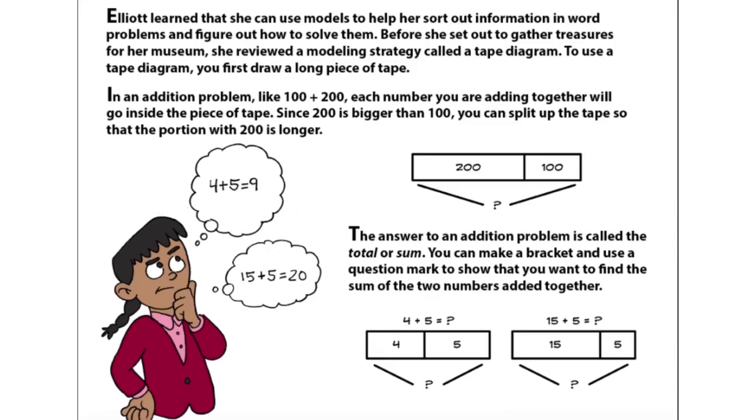Elliott learned that she can use models to help her sort out information in word problems and figure out how to solve them. Before she set out to gather treasures for her museum, she reviewed a modeling strategy called a tape diagram. To use a tape diagram, you first draw a long piece of tape.